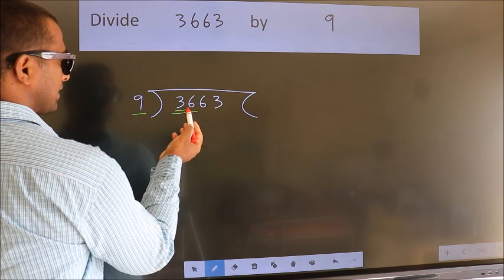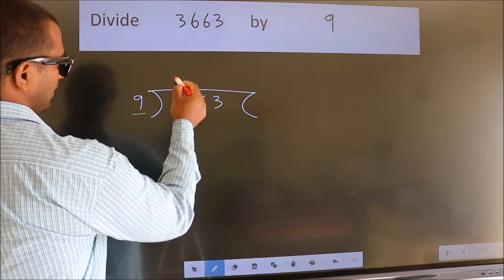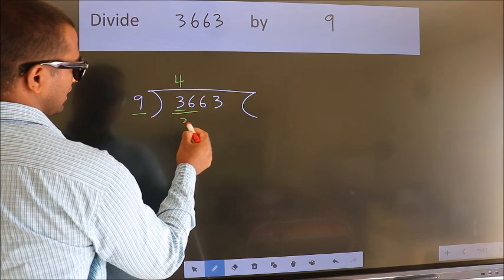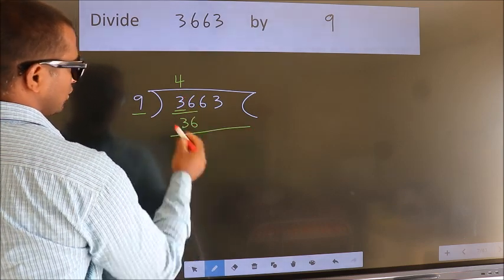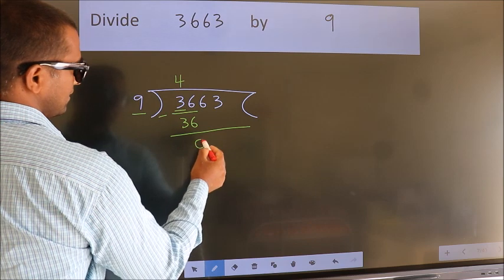When do we get 36 in the nine table? Nine fours 36. Now we should subtract. We get zero.